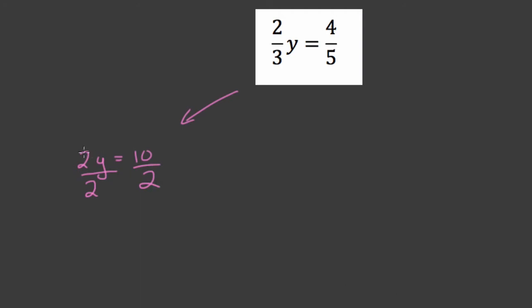And what happens is we have 2 times y divided by 2, that's just y, and 10 divided by 2 is 5. So we can solve for this kind of expression by dividing. In fact, anything where we have a coefficient times a variable equals a number, we can use this strategy.